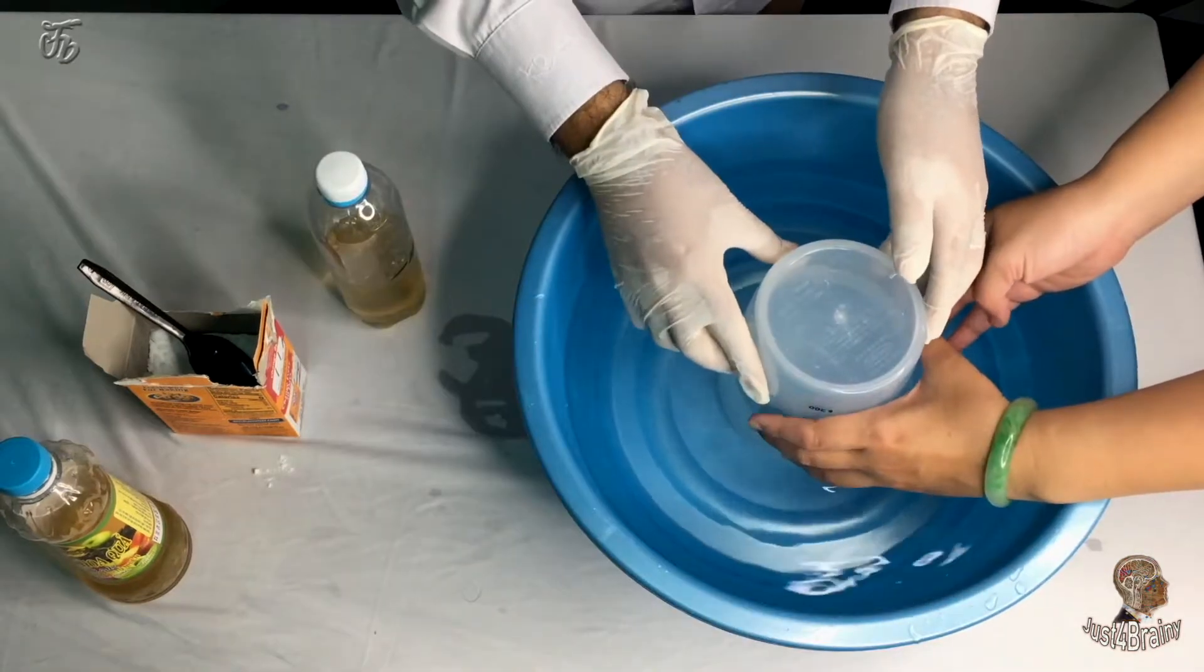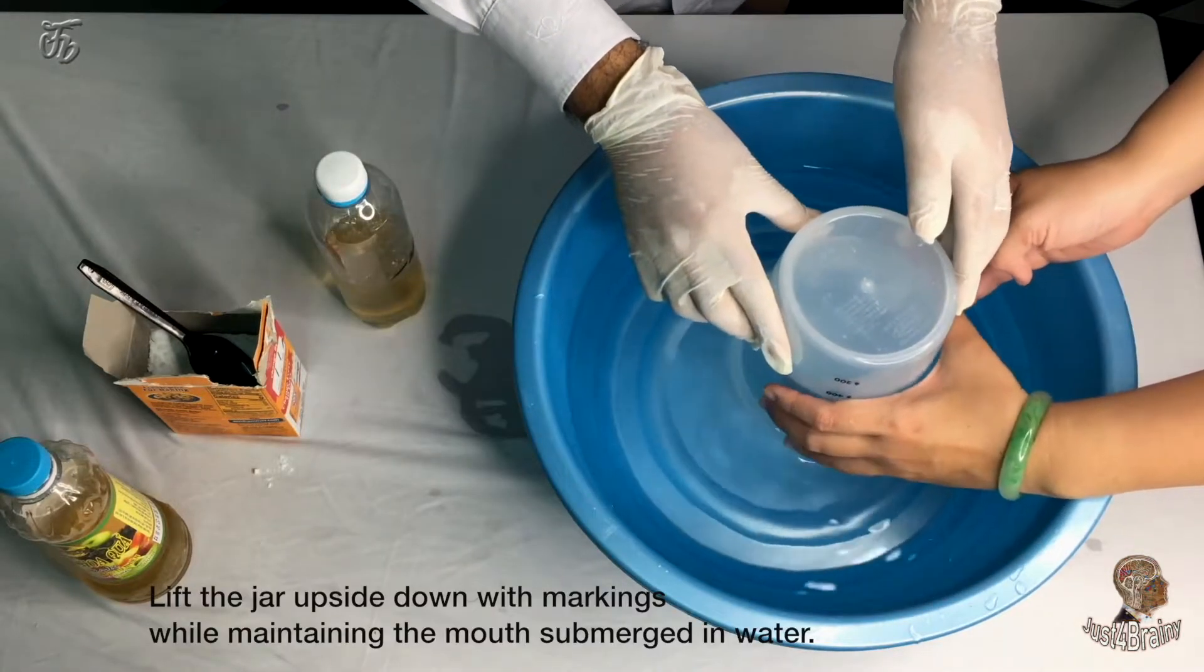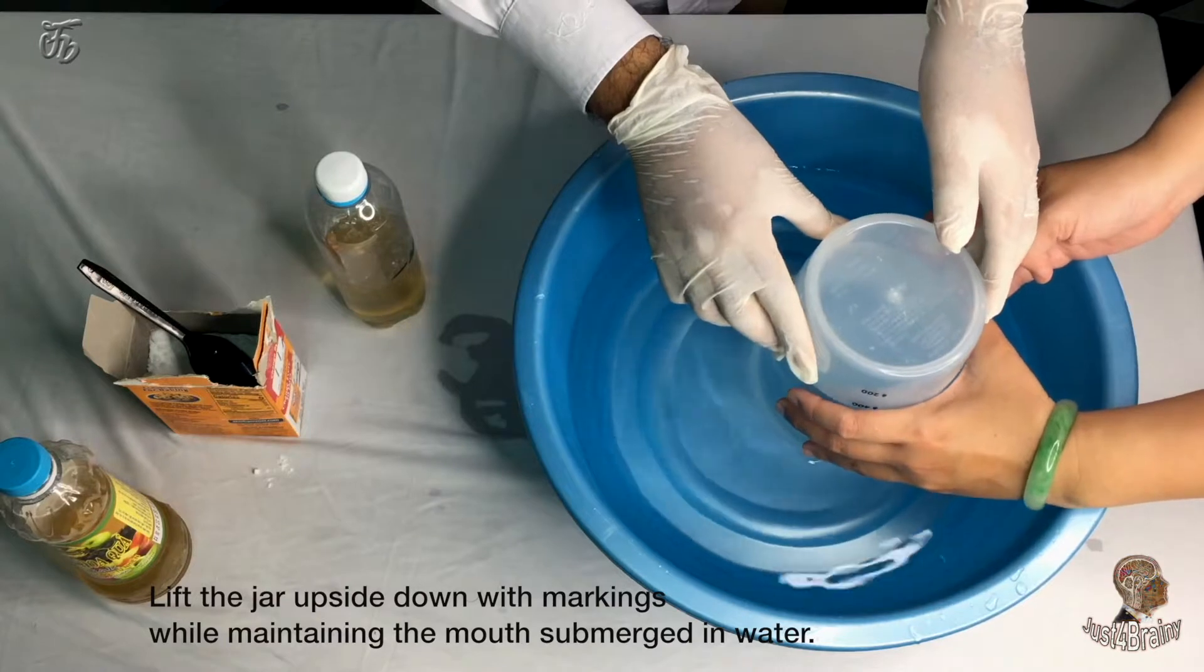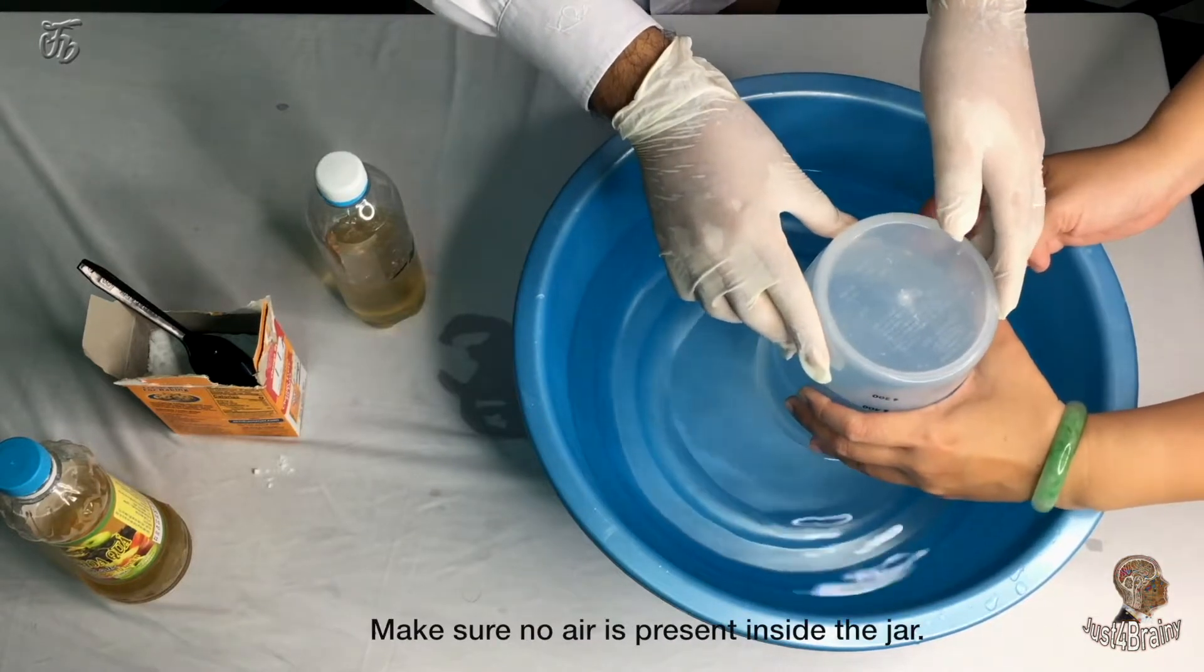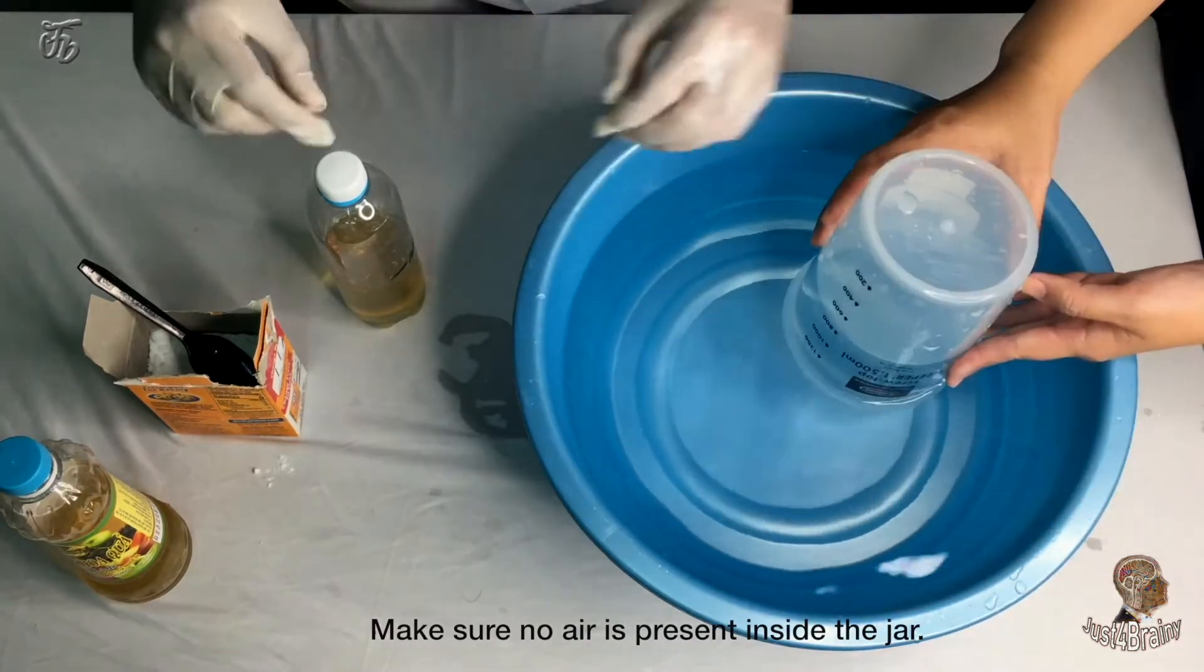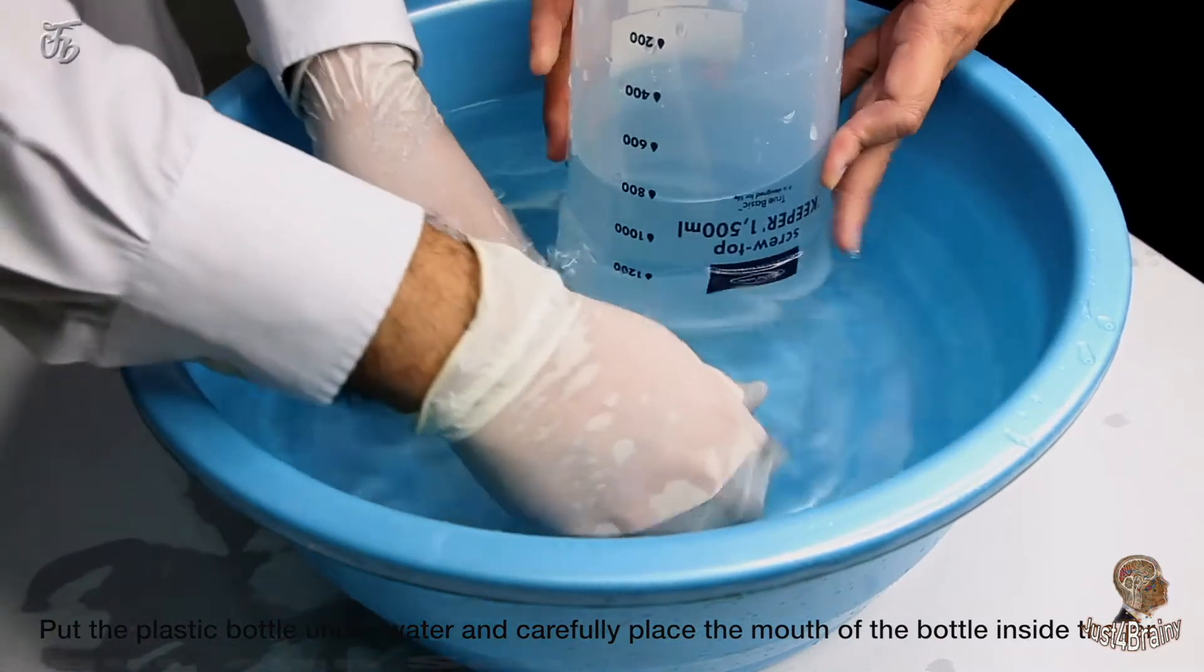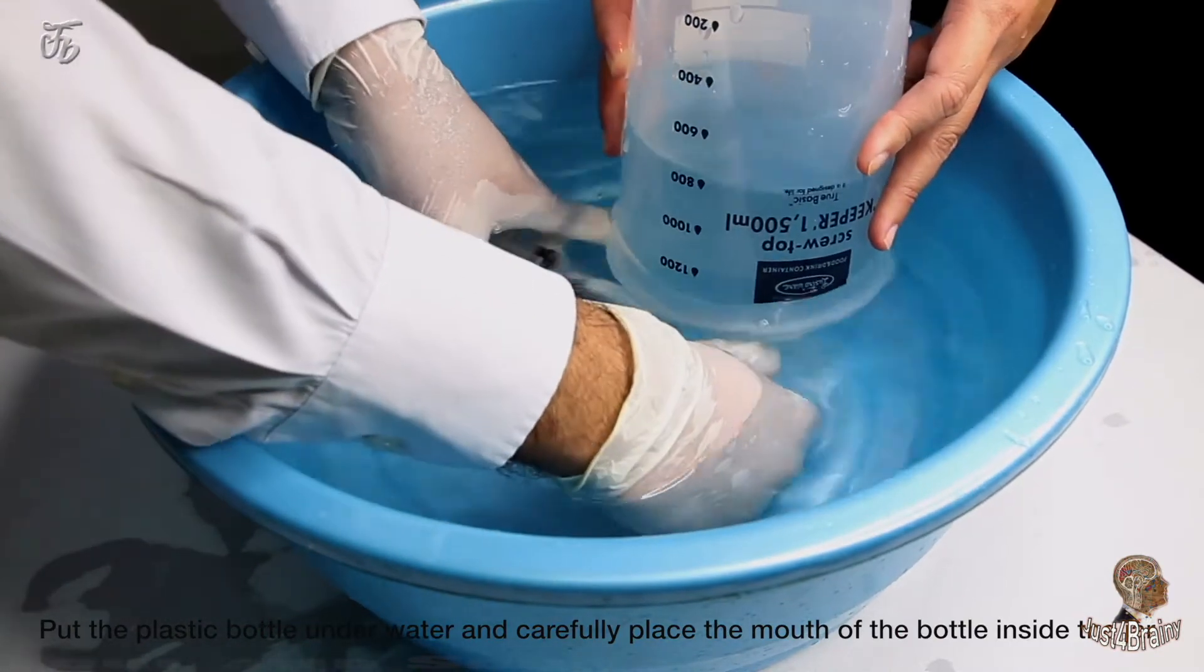You may need someone to help you with this part. Flip your jar upside down with markings while maintaining the mouth submerged in water. Make sure no air is present inside the jar. Put the plastic bottle under water and carefully place the mouth of the bottle inside the jar.